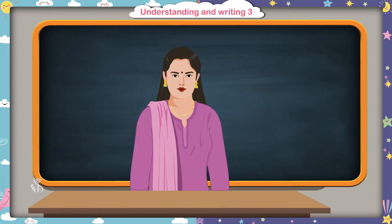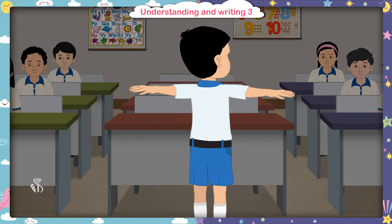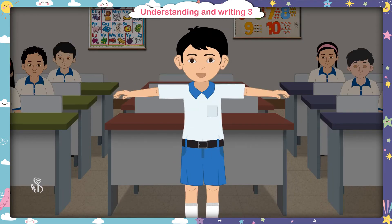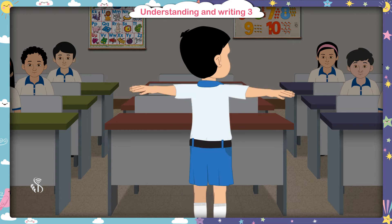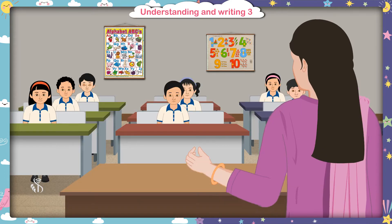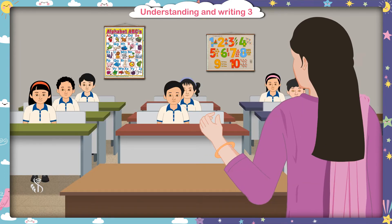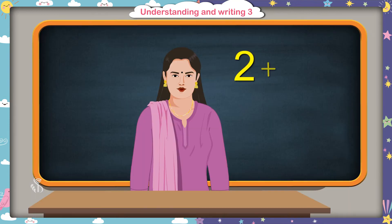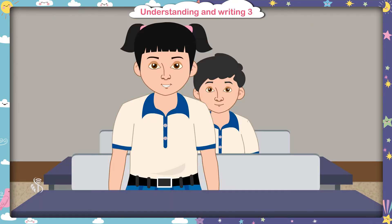Children, now turn around 3 times: 1, 2, 3. Well done. Very nice. Children, now repeat after me — 2 and 1 make 3. 2 and 1 make 3. Good.